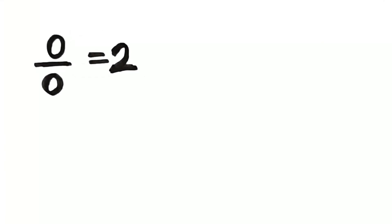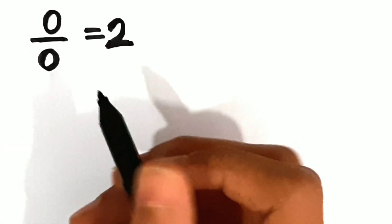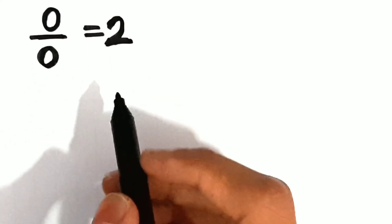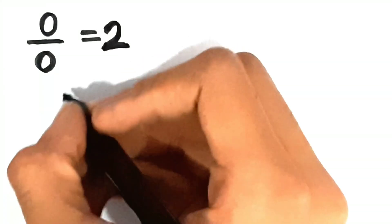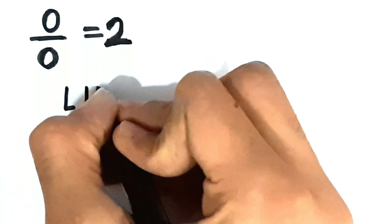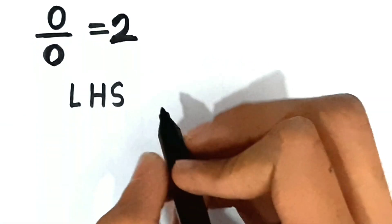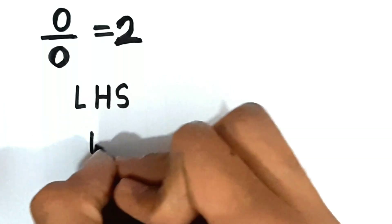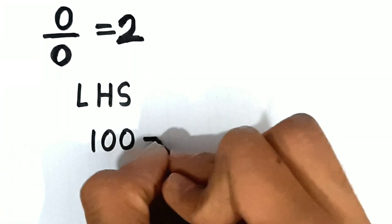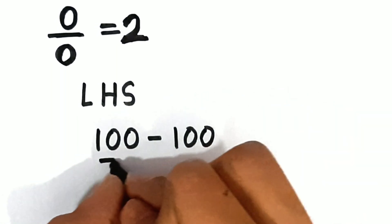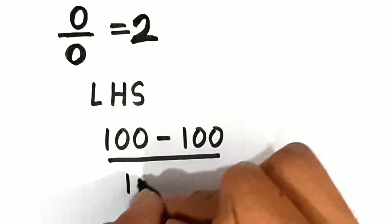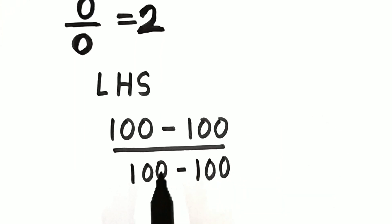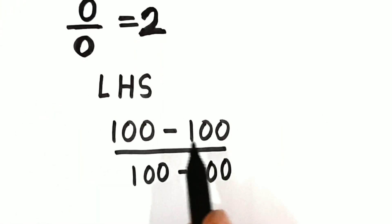Now for our last trick — trick number 3. In this trick, I'll prove that 0 divided by 0 is equal to 2. It is actually not mathematically correct, but I'll still prove it by bending the laws of maths. You could perform this trick on any of your friends. So first, I'll solve the LHS, which is 0/0. You can write LHS as 100 minus 100 upon 100 minus 100. That's the same as 0/0, right? Because 100 subtract 100 is 0. Nothing is wrong so far.